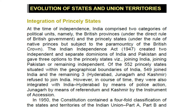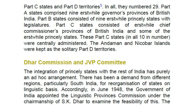In 1950, the Constitution contained a four-fold classification of the states and territories of the Indian Union: Part A, Part B, Part C states, and Part D territories — numbering 29 in all. Part A states comprised nine erstwhile governors' provinces of British India. Part B states consisted of nine erstwhile princely states with legislatures. Part C states consisted of erstwhile chief commissioners' provinces of British India and some princely states — ten in number — and were centrally administered. The Andaman and Nicobar Islands were kept as the solitary Part D territories.